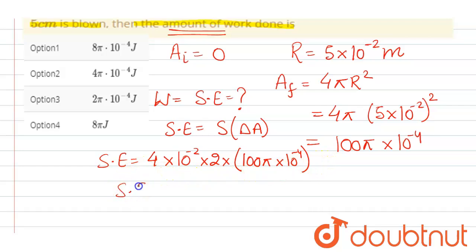So on solving here we get surface energy equal to 8π × 10^-4 joule. That means option 1 is correct. Thank you.